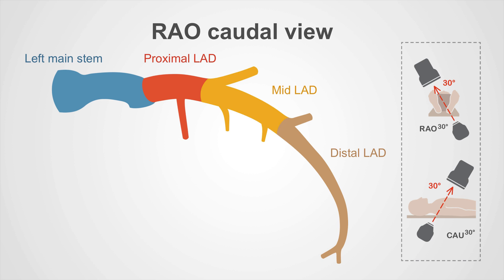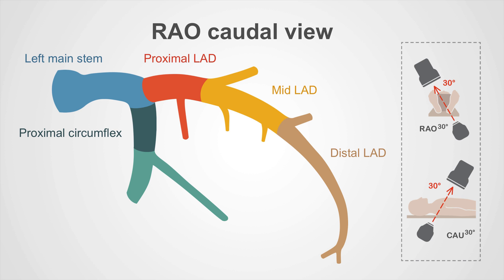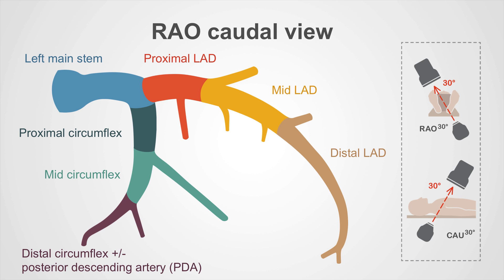Don't worry too much about the branches at present — we'll go back and discuss these in more detail. Going back to the left main stem, we said it divided to form the LAD, but the other branch it forms is the circumflex vessel. There's a proximal circumflex artery; after a branch this becomes the mid-circumflex artery and then the distal circumflex artery. If the left circulation is dominant, as discussed earlier, it supplies the posterior descending artery also.